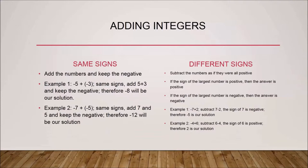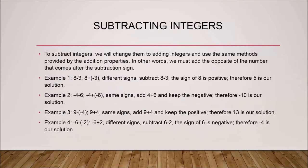We know that seven is the largest number and it has a negative sign, so the final answer is negative five. Example two: negative four plus six — we do six minus four, which equals two. Six is the largest number and it is positive, so the final answer is two.